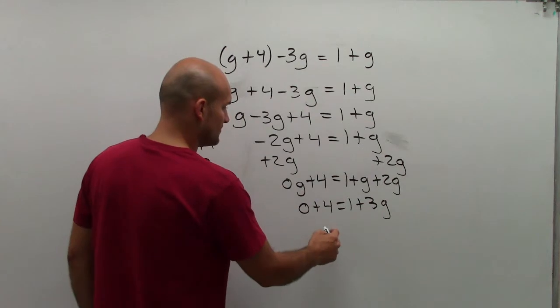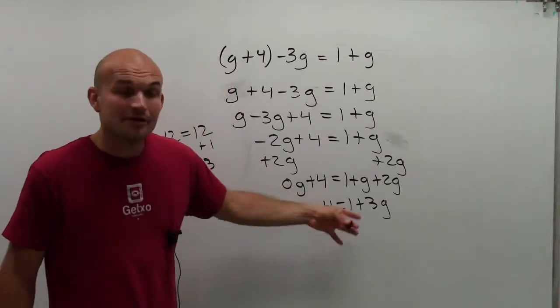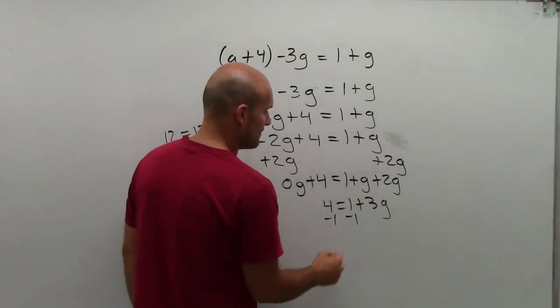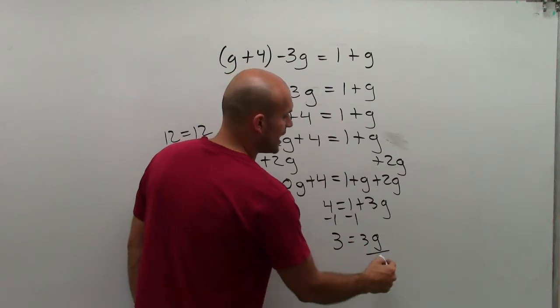4 plus 0 is 4, so I really don't even need to write that. So now you look at this and say, oh, it's a two-step equation. Subtract the 1 on both sides, and you get 3 equals 3g.